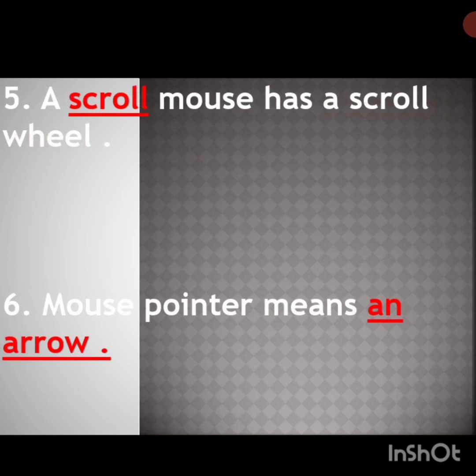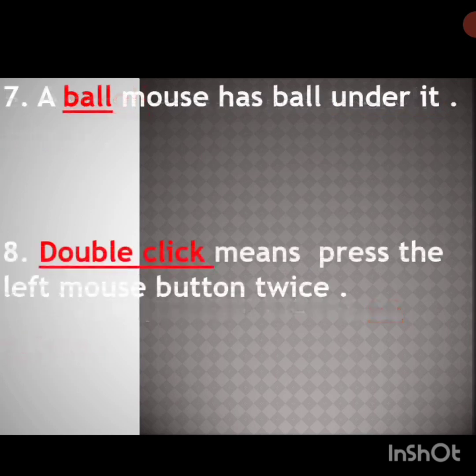S-C-R-O-double-L, scroll. Scroll mouse has a scroll wheel. Next: mouse pointer means an arrow. Next one: a ball mouse has a ball under it.